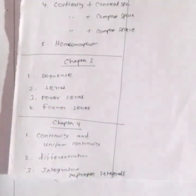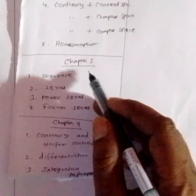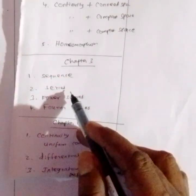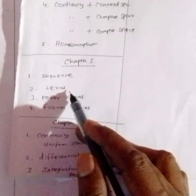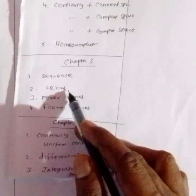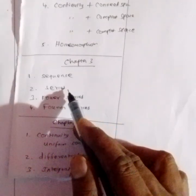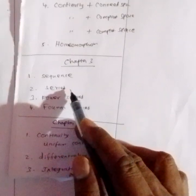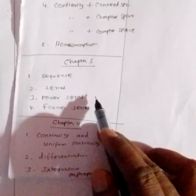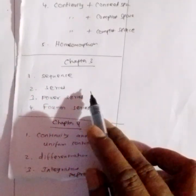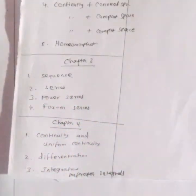The sequence is important to look at, and the series is the most important. The series covers: convergence, divergence, absolute convergence, conditionally convergent series — the series will pop up.